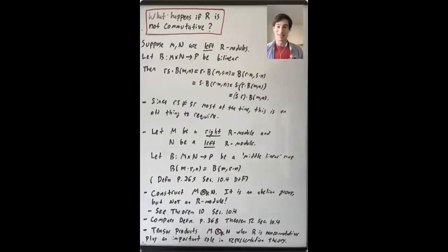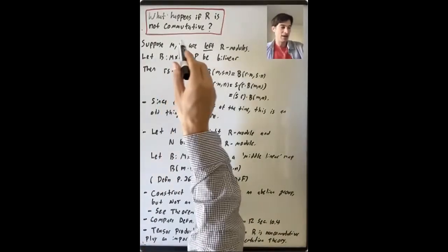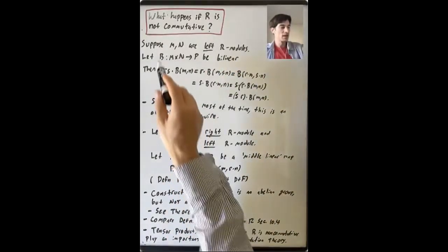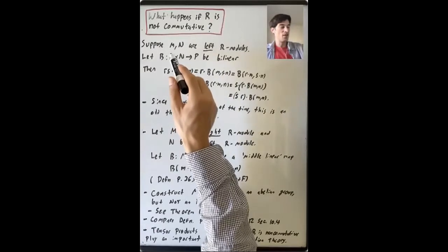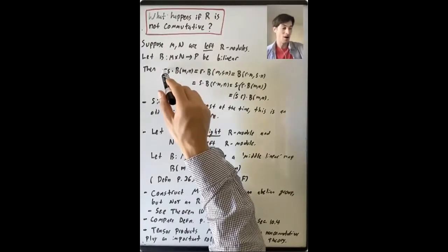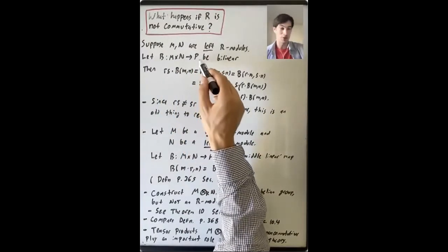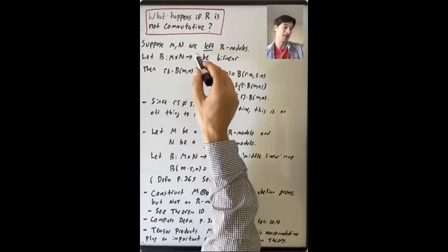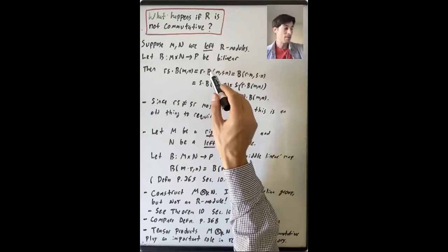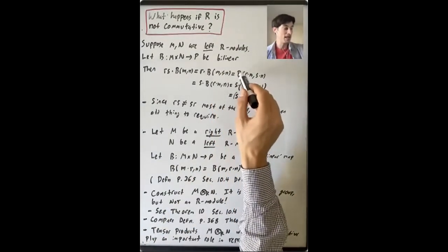The last thing I want to talk about in this lecture is what happens if R is not commutative. Suppose M and N are left R-modules. When R is not commutative, we have left R-modules and right R-modules. Let B be a function from M cross N to P that is bilinear. Using the properties of bilinearity, and letting P be a left R-module as well, we see that the ring element RS acting on B(M, N) is the same as R dot B(M, SN), which equals B(RM, SN), which must equal S times B(RM, N), which is S times R times B(M, N) — and so this is SR acting on B(M, N).